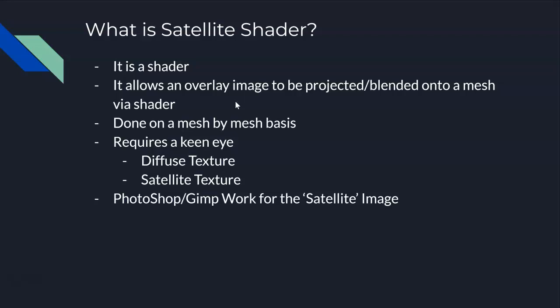That's essentially what the satellite shader is doing. The satellite piece — your overlay — is what gets projected on there and you can manipulate it. This is done on a mesh-by-mesh basis, so your fairways, rough, sand, and cart paths — any material or mesh can have its own shader. Typically your fairways, roughs, greens, and tees all share the same overlay, but bunkers and cart paths have a different overlay, and there are reasons for that which will be explained later.